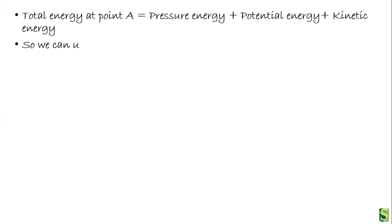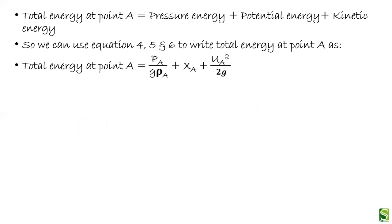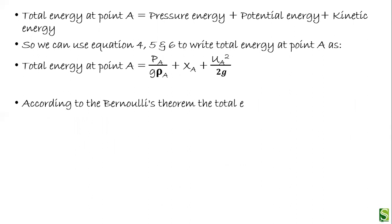The total energy at point A is the sum of all three energies — pressure energy plus potential energy plus kinetic energy. Substituting the equations, total energy at point A equals P_A over rho_A plus x_A plus mu_A squared over 2g.